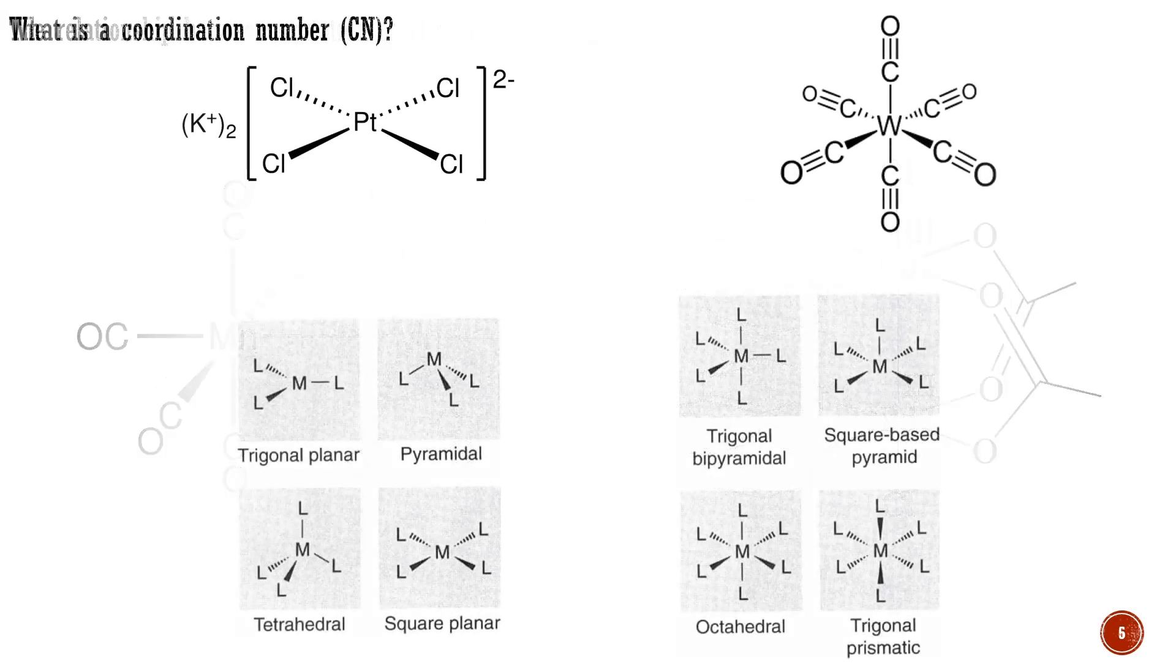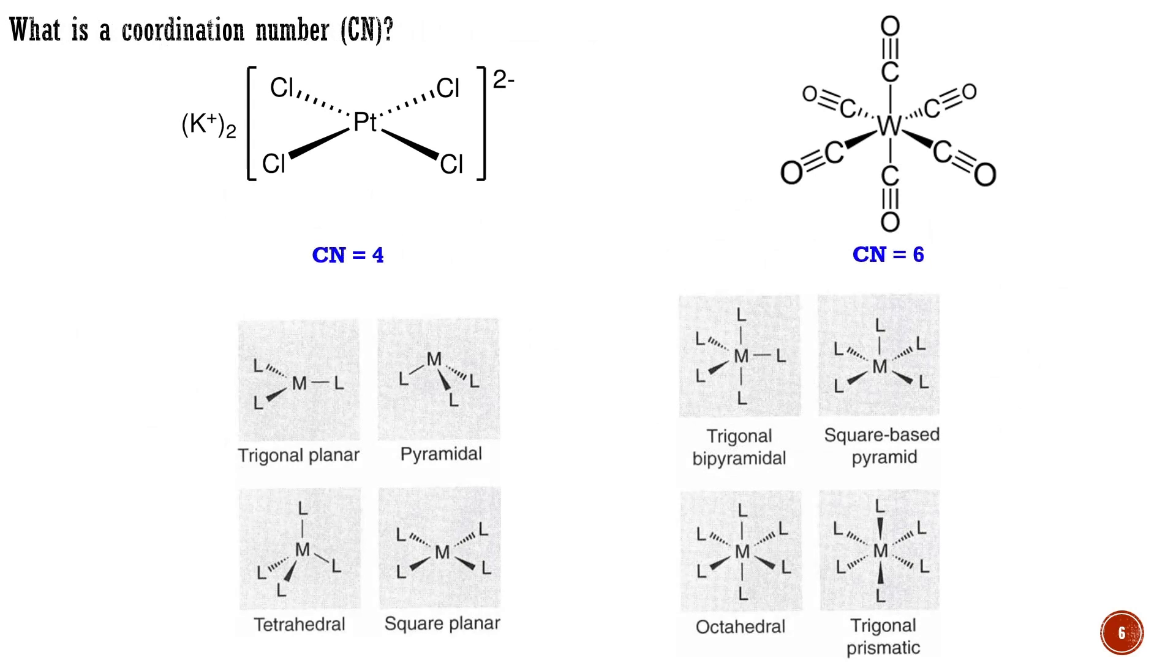The coordination number of a complex having only monodentate ligands is simply the number of ligands present. For instance, in potassium tetrachloroplatinate, the coordination number is 4, while in tungsten hexacarbonyl, the coordination number is 6. The coordination number cannot exceed 9 for the d-block because the metal only has 9 valence orbitals, and each ligand needs its own orbital.